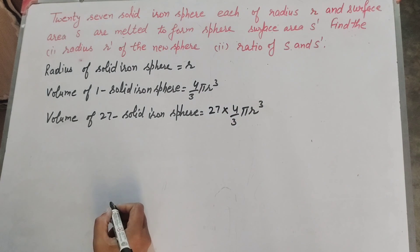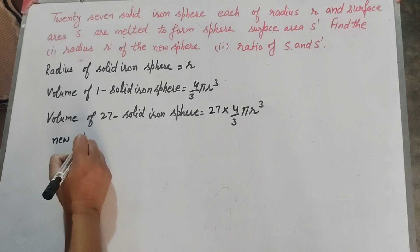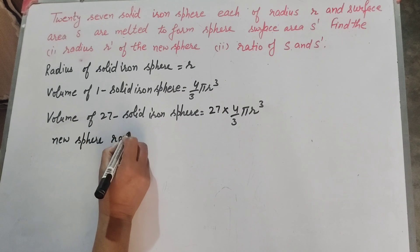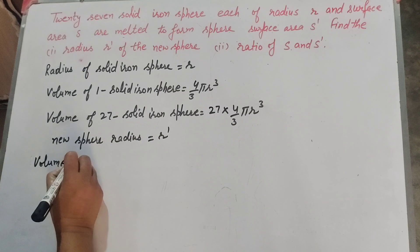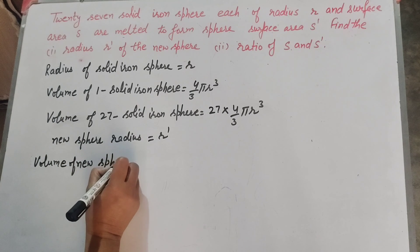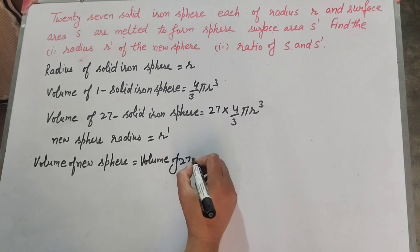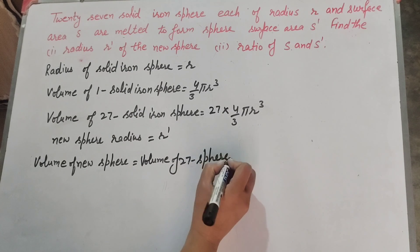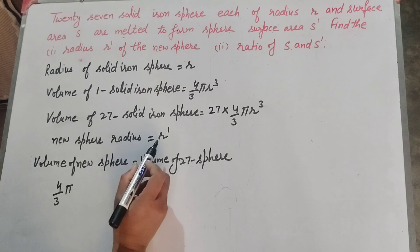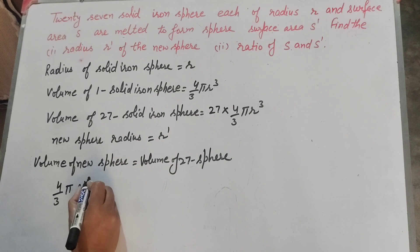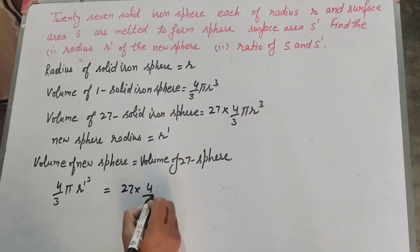Now we find radius r' of the new sphere. The radius of the new sphere is r'. Volume of new sphere equals volume of 27 spheres. Using the formula, volume of new sphere equals 4/3 π r'³, which equals volume of 27 spheres: 27 × 4/3 π r³.